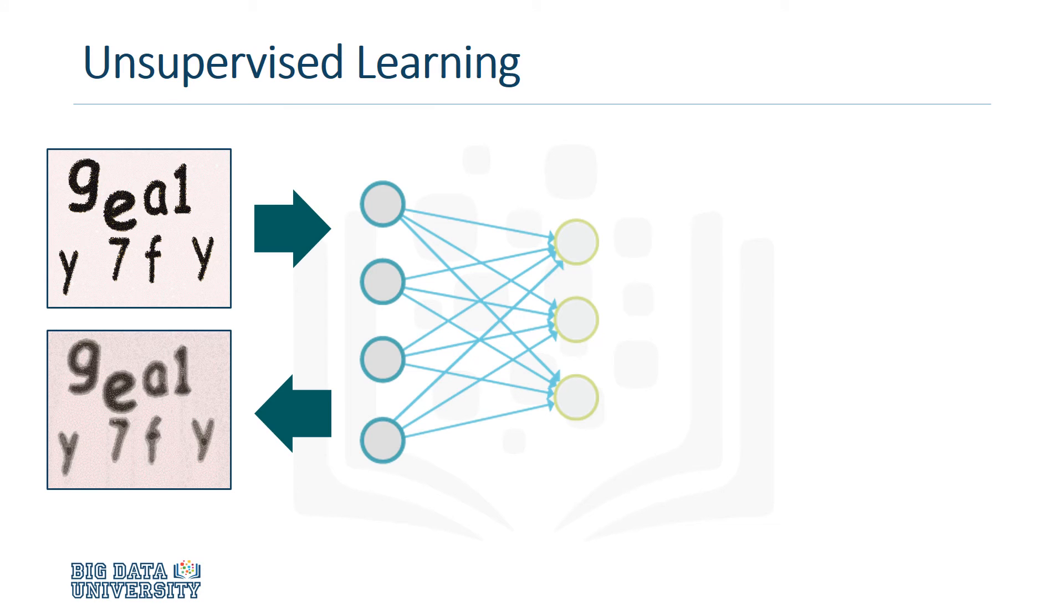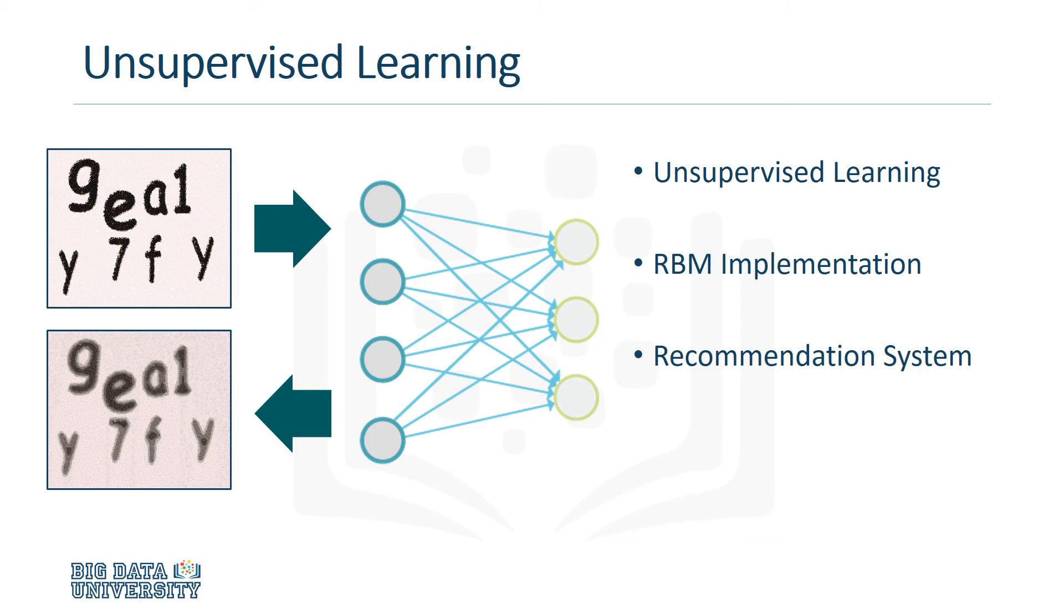Module 4 began with an overview of unsupervised learning and how it differs from supervised learning. We then explained the structure of the restricted Boltzmann machine, as well as how to build and train one in TensorFlow. As a practical example, we provided an RBM implementation of a movie recommendation system.